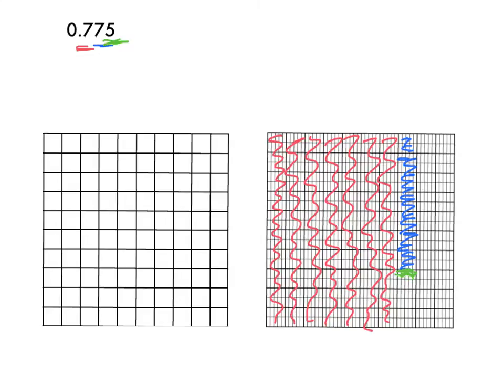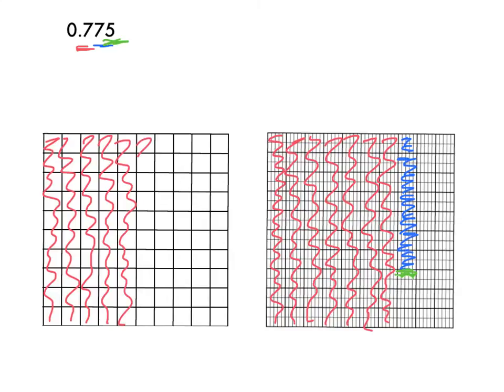Now I can still represent the same decimal on a hundredths grid in much the same way. First, I had seven-tenths, so if I shade it in place by place, again I shade in seven-tenths — four, five, six, seven.